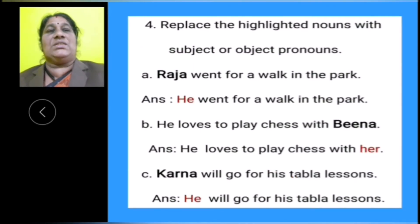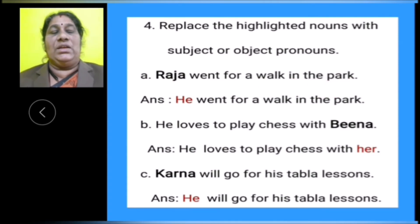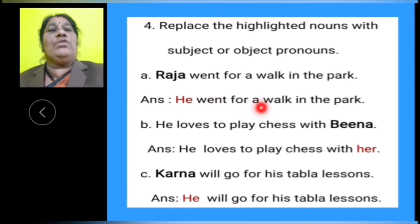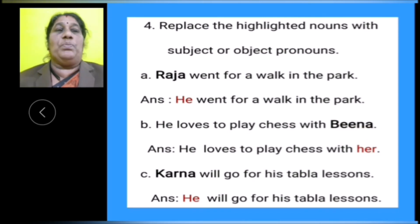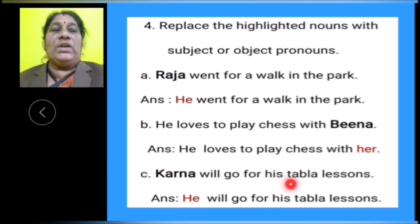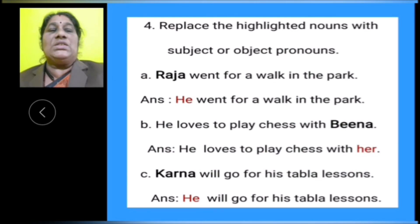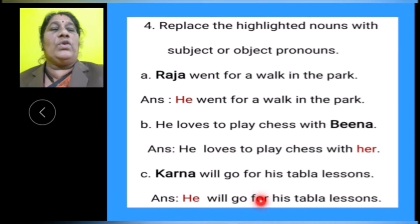Now, let us do the next exercise. Replace the highlighted nouns with subject or object pronouns. A: Raja went for a walk in the park. The subject is highlighted, so subject pronoun is used — he went for a walk in the park. B: He loves to play chess with Beena. The object is highlighted, so object pronoun is used — he loves to play chess with her. C: Karna will go for his tabla lessons. The subject is highlighted, so subject pronoun is used — he will go for his tabla lessons.